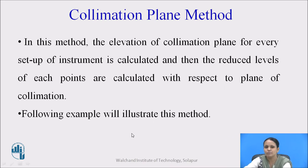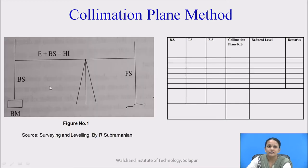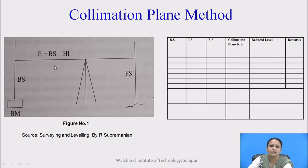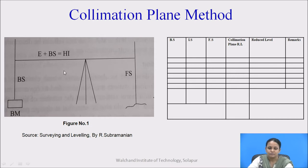Now we will see with an example how to calculate the reduced levels. In this figure, the dumpy level is set up at a certain height and BM indicates the benchmark. This height from the ground surface is called as the height of instrument and this level is called as the collimation plane level. BM stands for benchmark and we should know the reduced level of the benchmark.